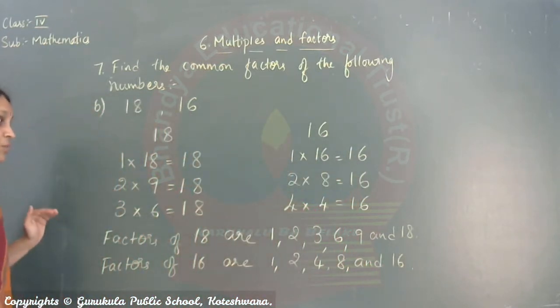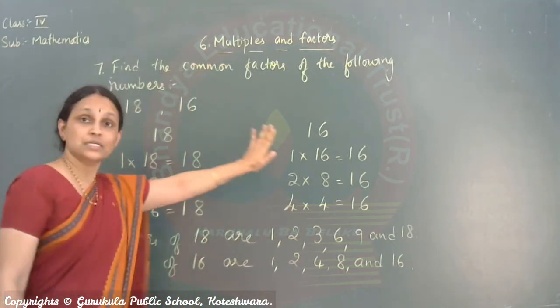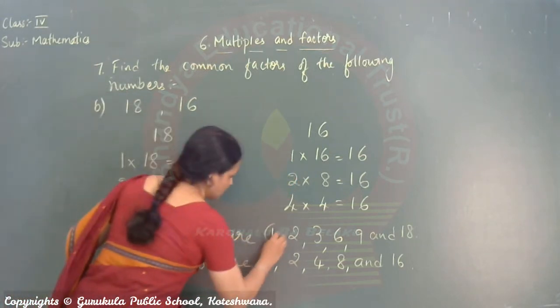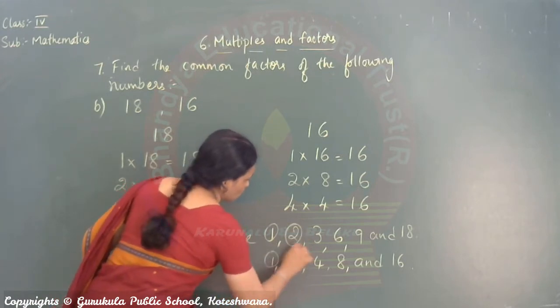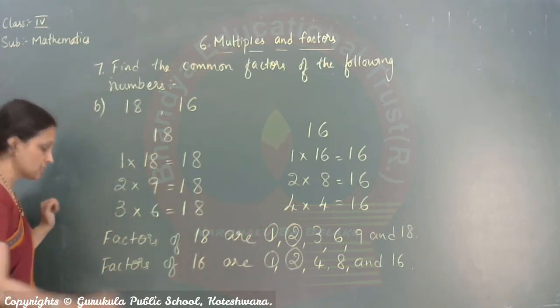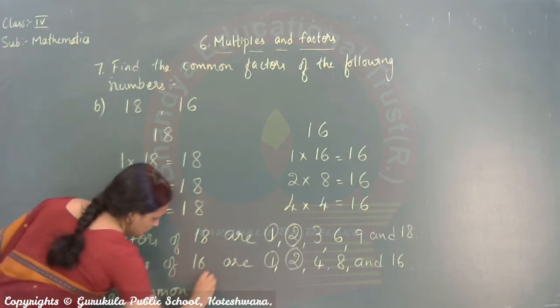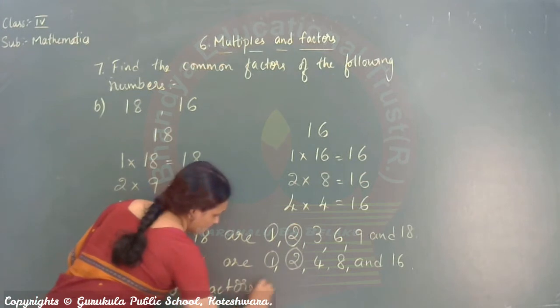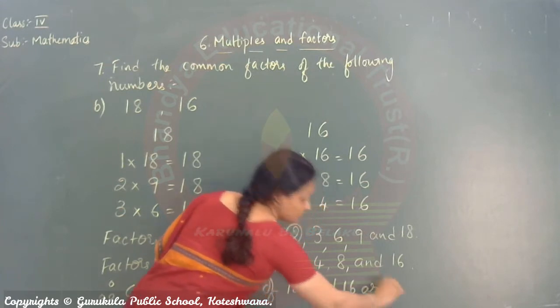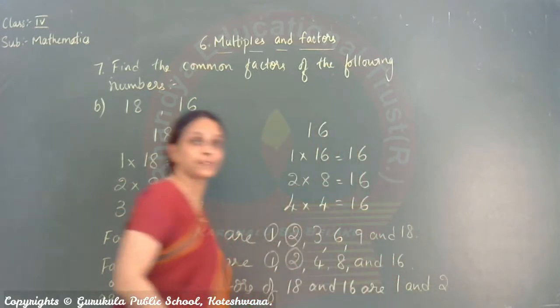Now. Just check. Which are the common factors of 18 and 16. Can you just check and tell me. Yes. 1 and 2. Is there any other number common. No. So. That's it. You can write them. Therefore, common factors of 18 and 16 are 1 and 2.